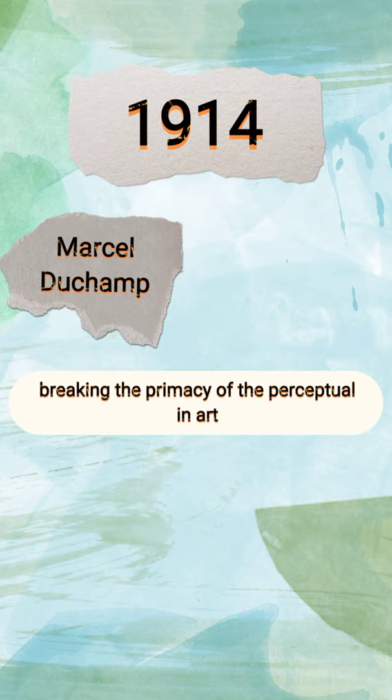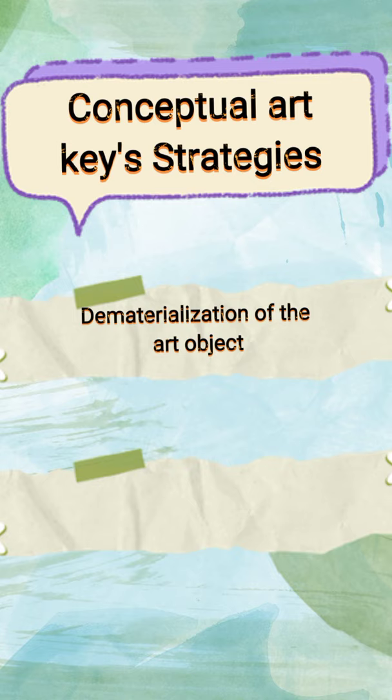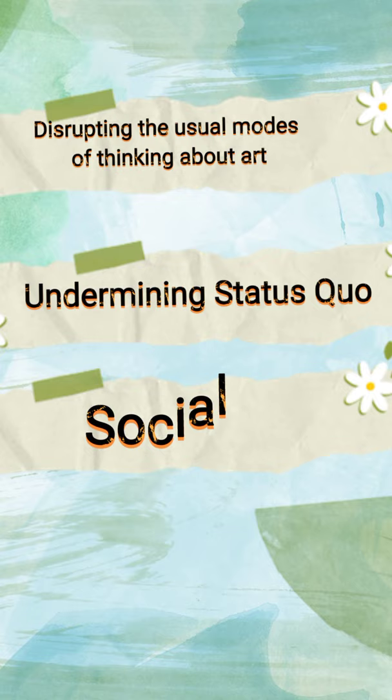In 1914, French artist Marcel Duchamp broke the primacy of the perceptual in art, which logically extended to one of the most influential movements of the late 20th century known as conceptual art. The conceptual art's key strategies are dematerialization of the art object and privileging of language-based art, coupled with disrupting the usual modes of thinking about art and undermining the status quo and social and political order in art.